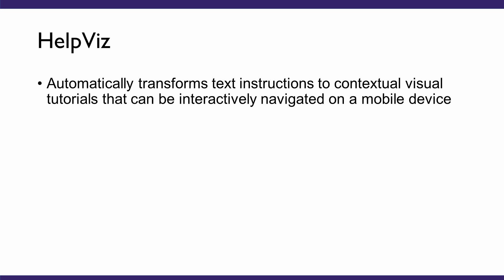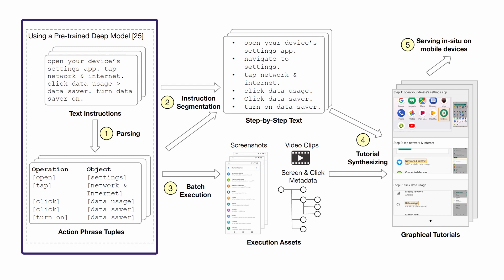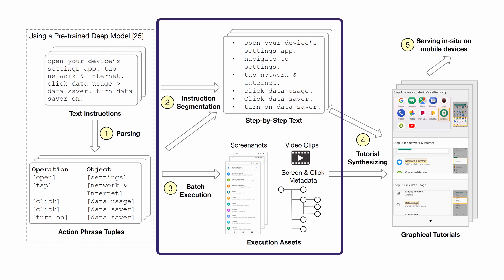We call our tool HelpBiz, which can automatically transform a batch of text instructions to contextual visual tutorials that can be interactively navigated on a mobile device. HelpBiz transforms text instructions to graphical tutorials by extracting a sequence of actions from each text instruction through an instruction parsing model and executing the extracted actions on a simulation infrastructure that manages an array of Android emulators.